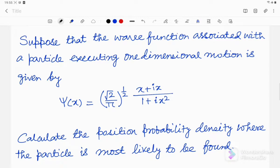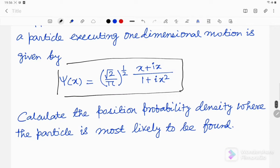Hello friends, welcome to my channel. Today I shall solve another problem from quantum mechanics. We have one particle executing one-dimensional motion along the x-axis, and the wave function associated with the particle is given by this equation. We have to calculate the position probability density where the particle is most likely to be found.